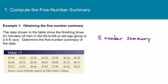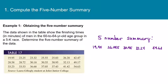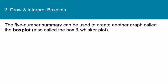So we can write down that our five-number summary is 19.95, 26.055, 30.95, 37.24, and 54.63. Once we have the five-number summary, that can be used to create a graph called a box plot, also called a box and whisker plot.